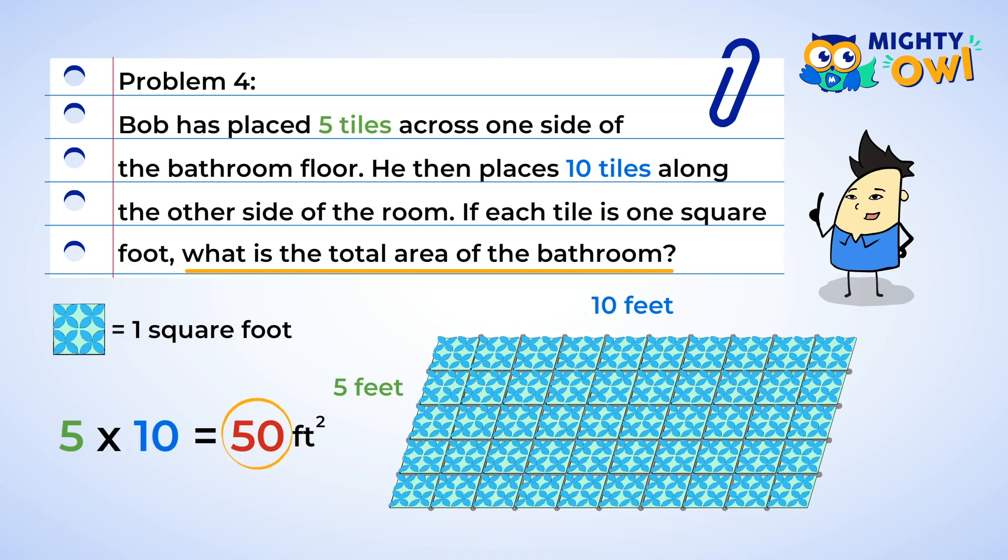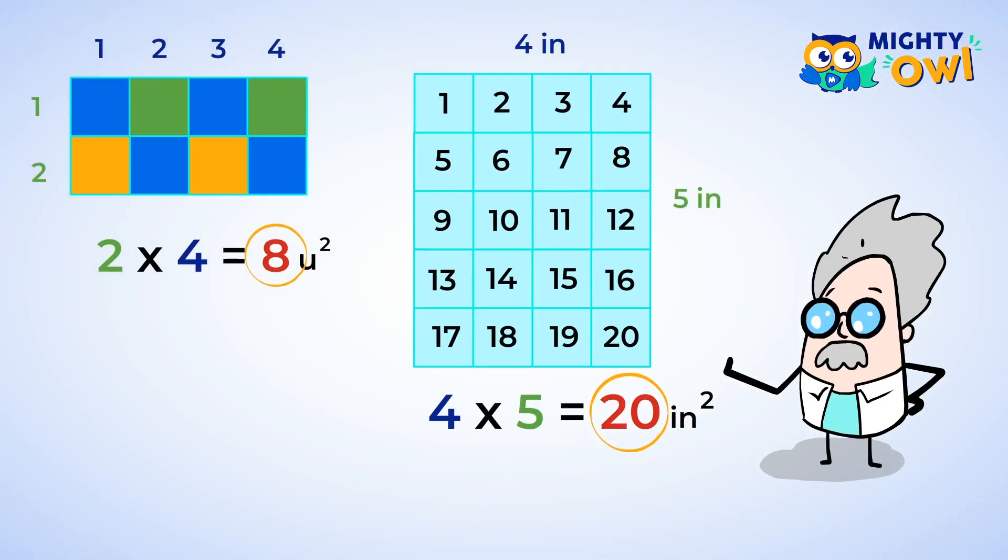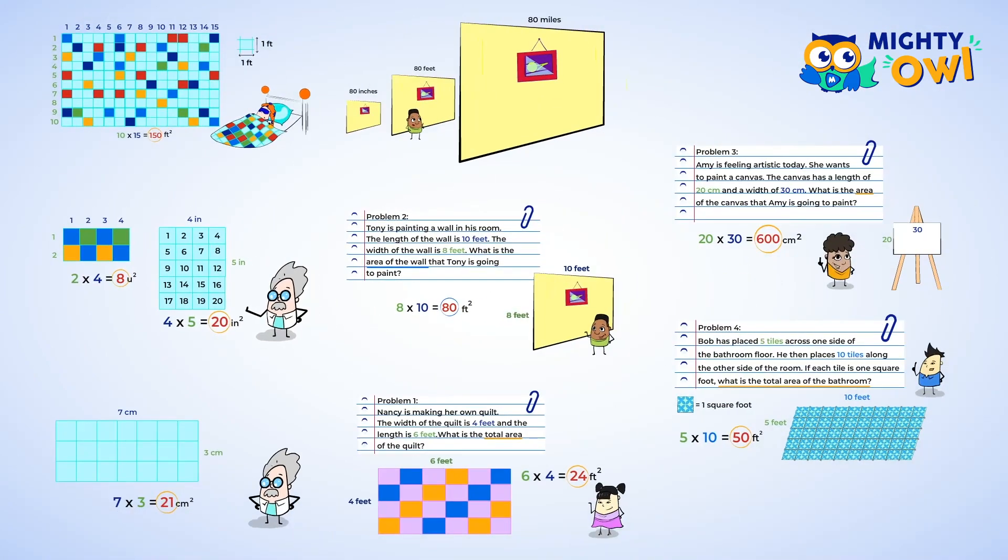Area is everywhere. You've learned a quick way to find the area of rectangles by multiplying the two sides, the width and the length, together. And make sure that the units are squared since the area is two-dimensional. Awesome work today. See you in the next video lesson.